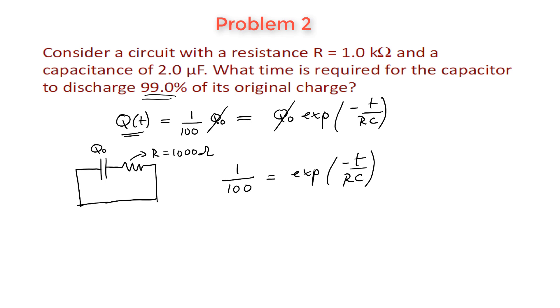So all we have to do now with this expression is isolate time somehow. If you have exponential and you want to eliminate the exponential, what you do is you take the natural logarithm on both sides. 1 over 100. And the natural log of any exponential function simply returns the exponent, minus T over RC.